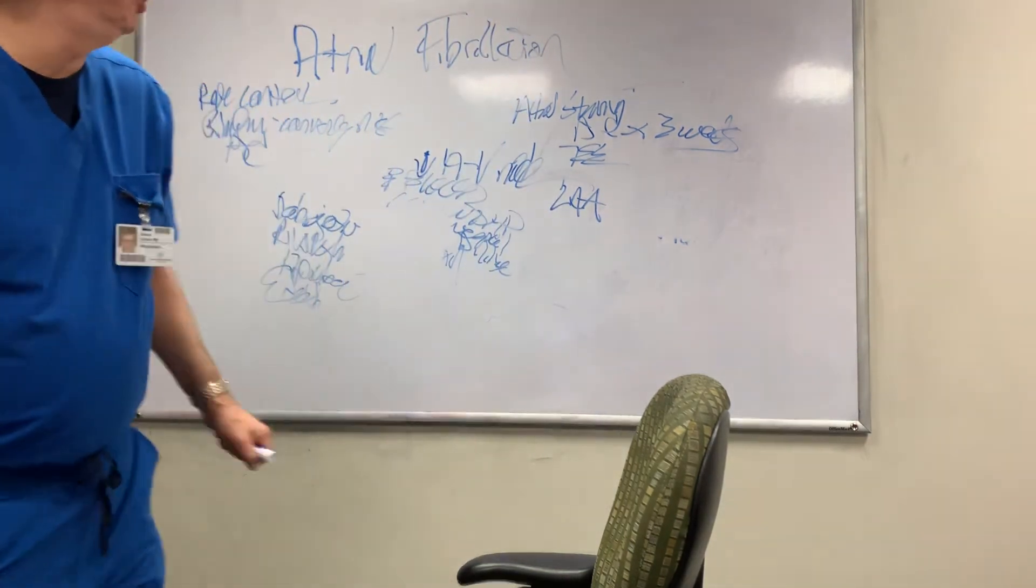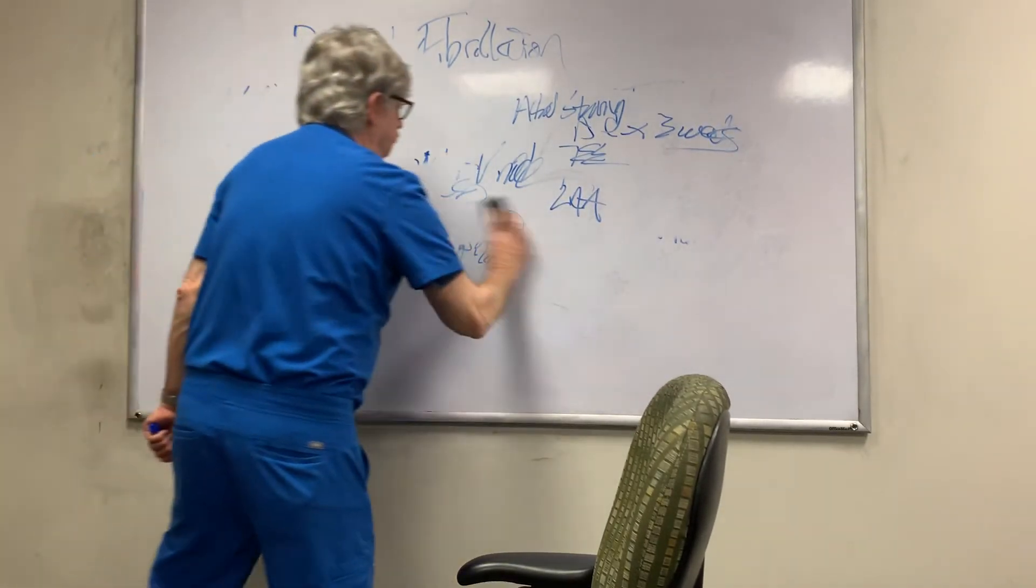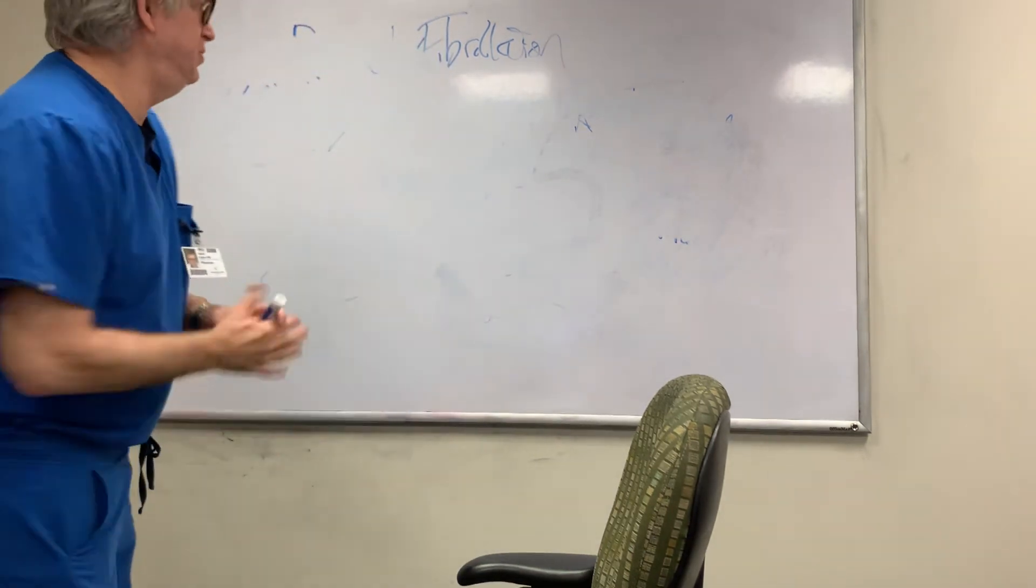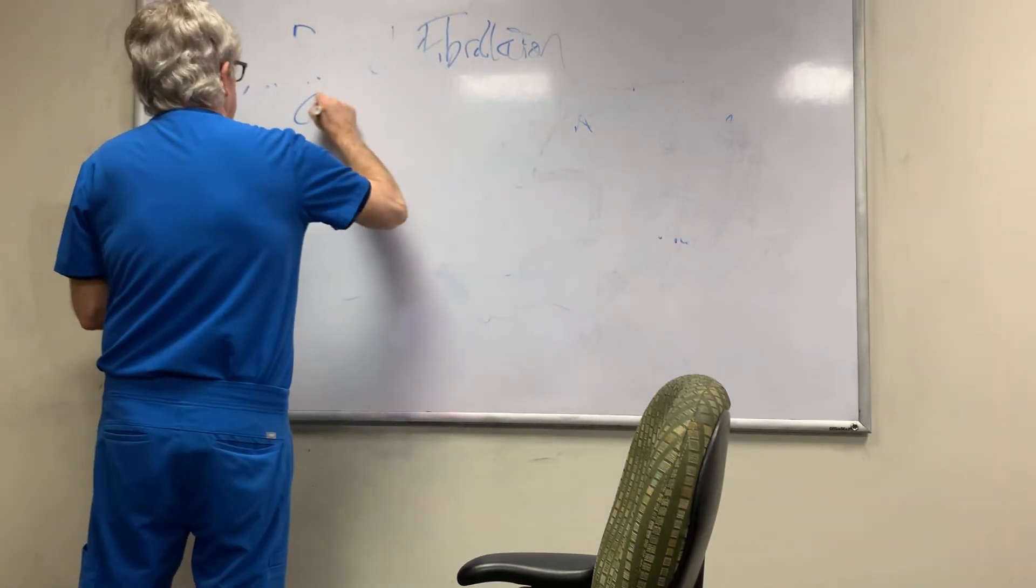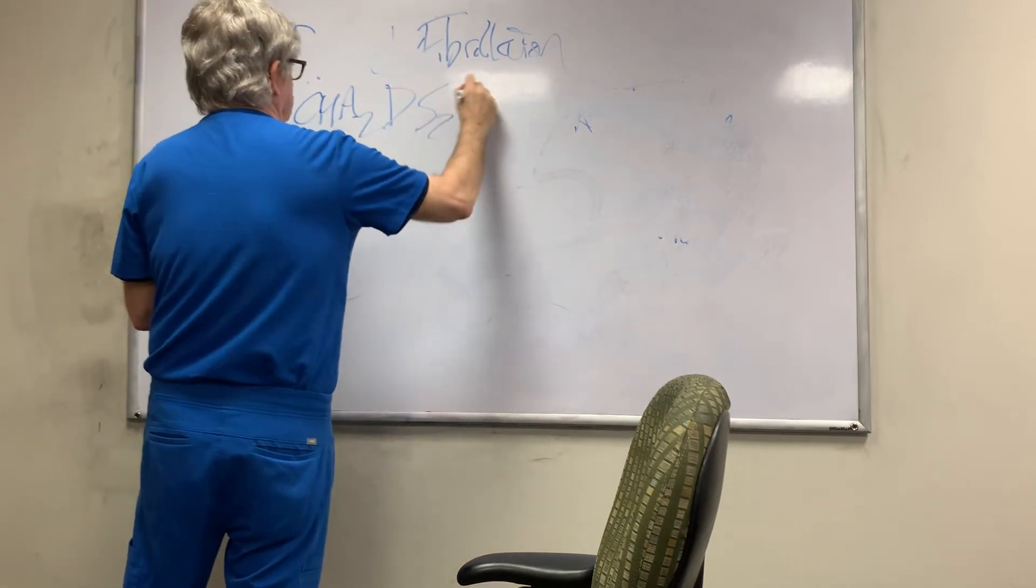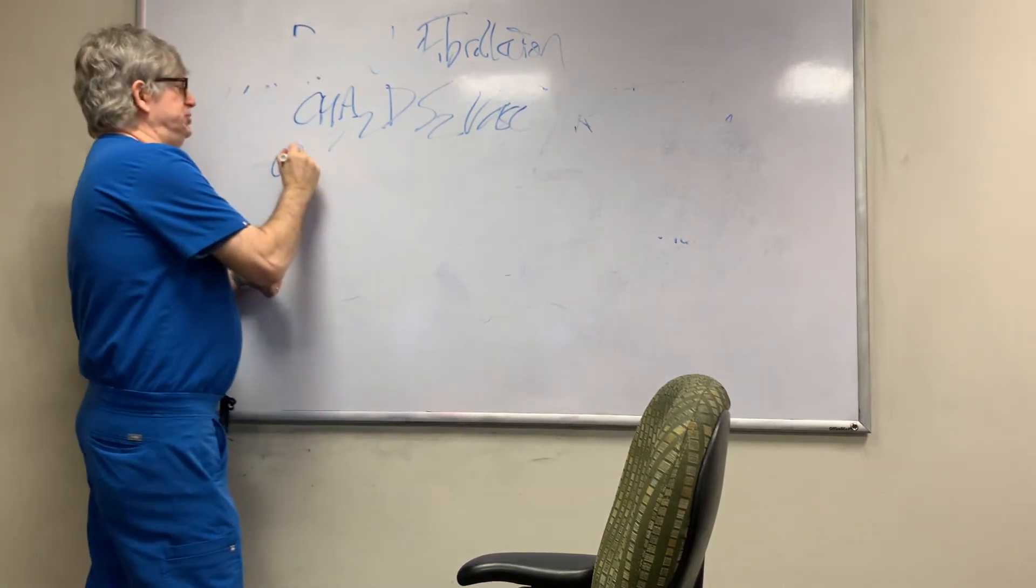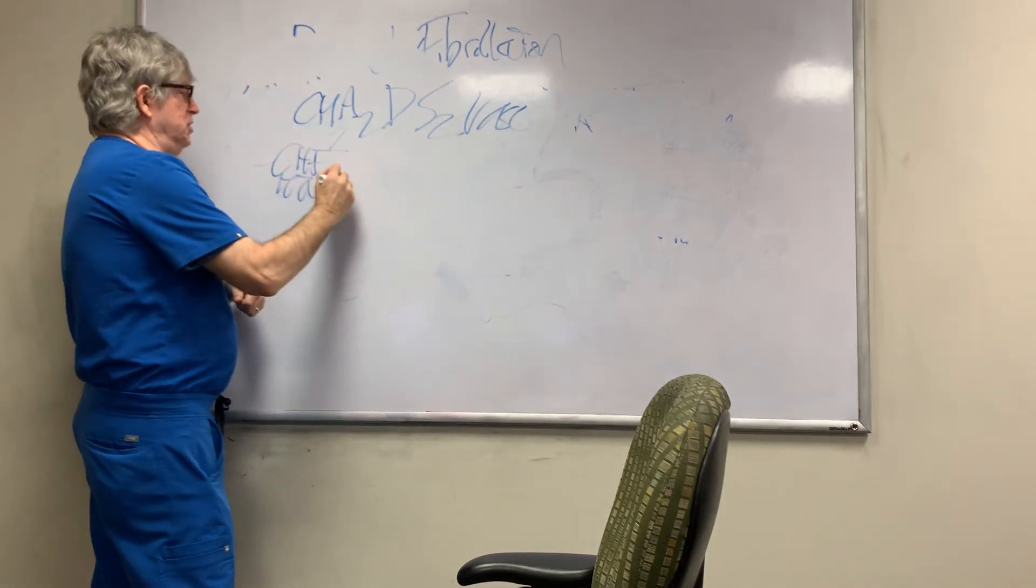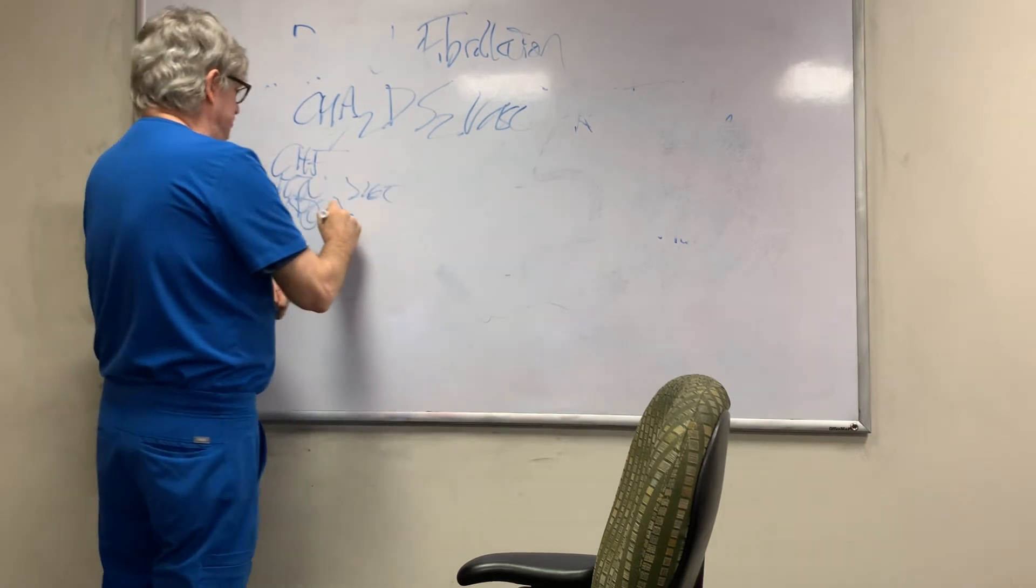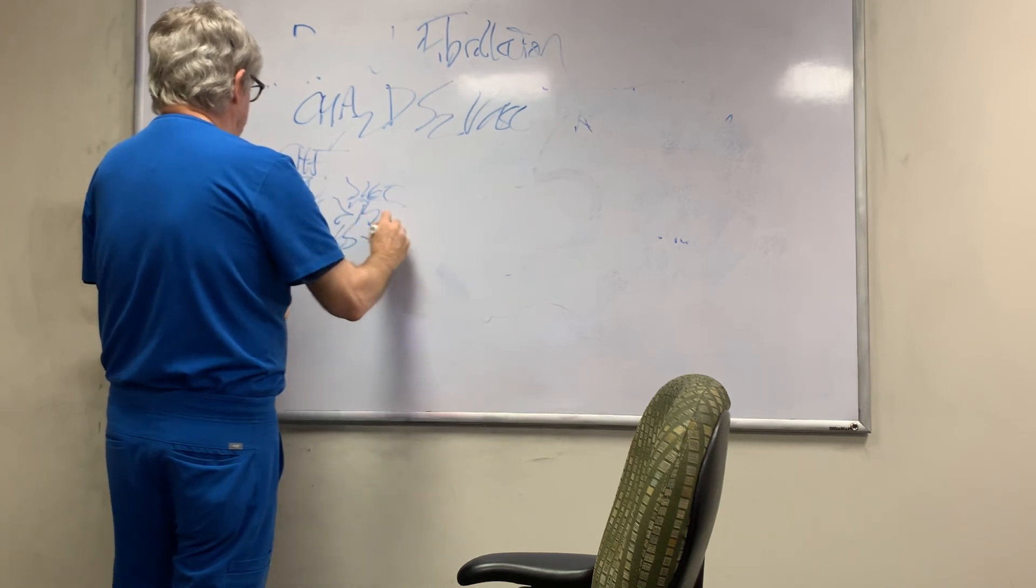How do you assess who needs to be anticoagulated? There were different rules, but here's basically the way it's been. It's called the CHA2DS2-VASc rule. So, C is CHF, H is hypertension, systolic greater than 160. A is age—you get two points for age greater than 75, one for 65 to 74.